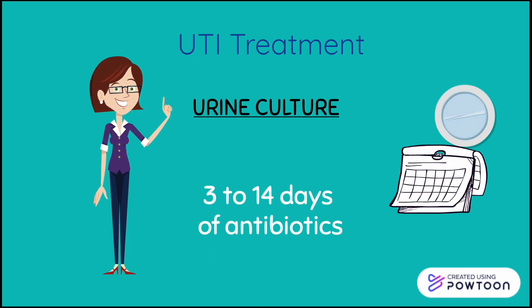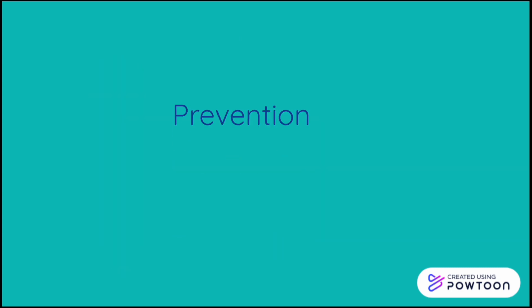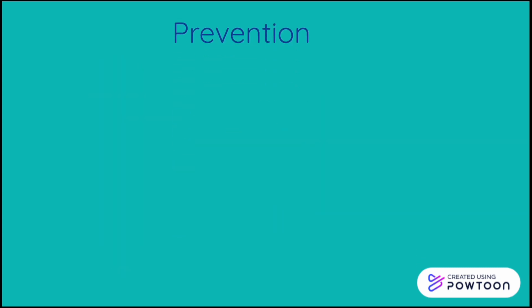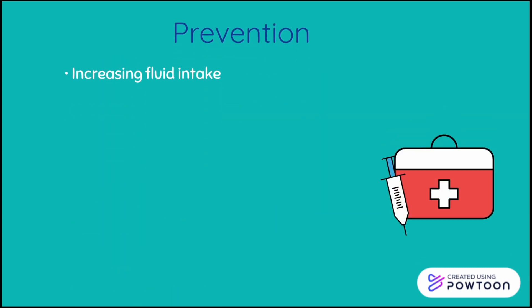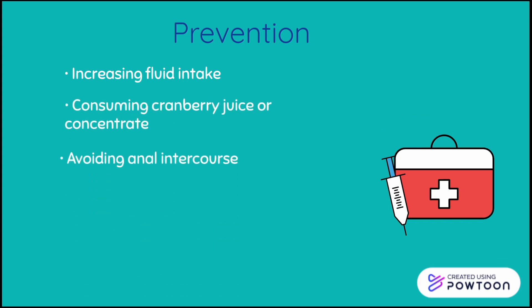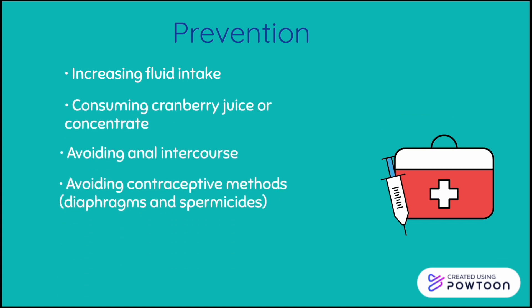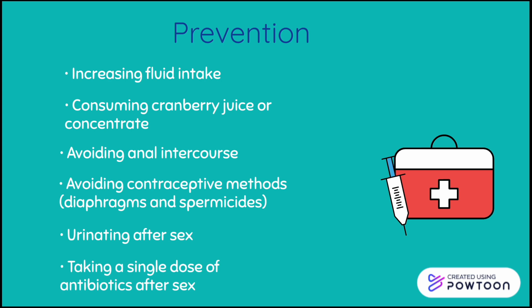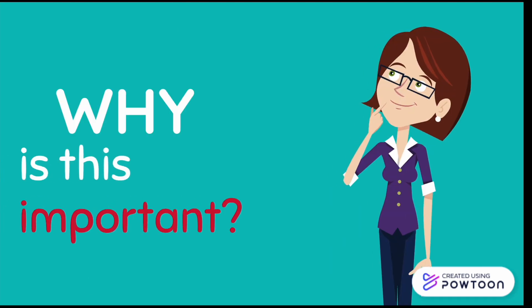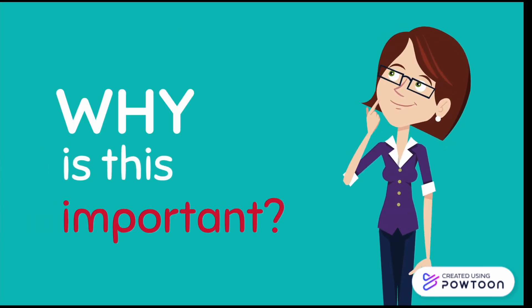The duration of treatment is usually between 3–14 days. There are different methods of prevention for UTIs: increasing fluid intake, drinking more cranberry juice or concentrate, avoiding anal intercourse, avoiding the use of contraceptive measures like spermicides or diaphragms, urinating after sexual intercourse, and taking one dose of antibiotics after sex are some ways that you can reduce the chances of contracting a UTI.